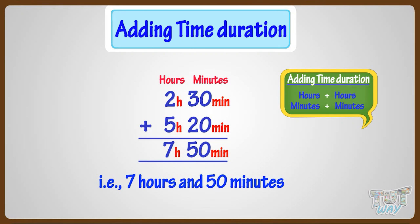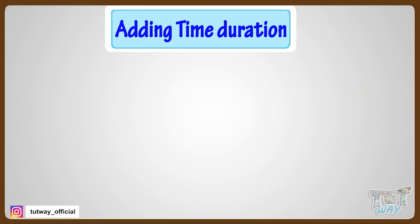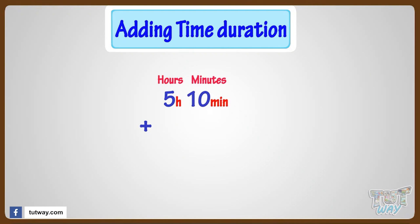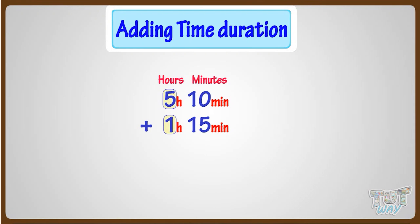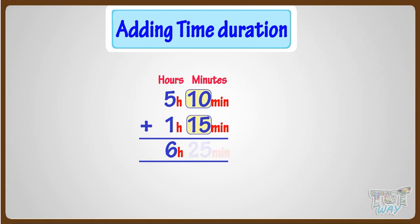Let's take another example. We have to add 5 hours 10 minutes to 1 hour 15 minutes. Adding hours, we get 6 hours. And adding minutes, we get 25 minutes. So our answer is 6 hours 25 minutes.